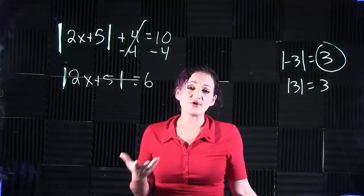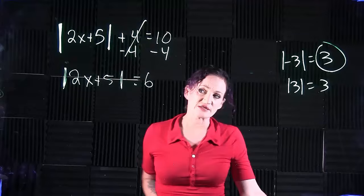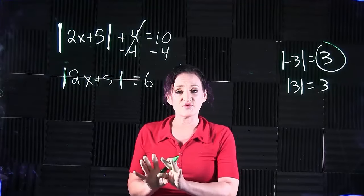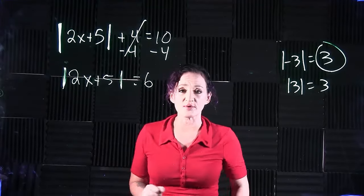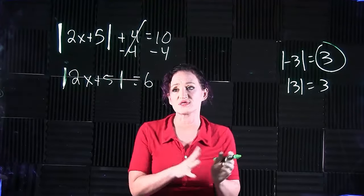So with absolute value equations, absolute value inequalities even, once we get our absolute value expression isolated, we assume for both scenarios and we always break it up into two equations, two inequalities. So this is how that works.